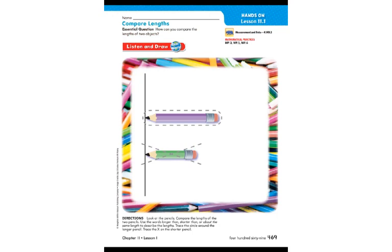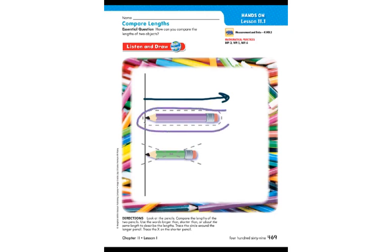In the beginning of this GoMath lesson, we are comparing the lengths of two pencils — a purple pencil and a green pencil. We line them up to see which one is longer or shorter, or about the same length. Compare the lengths of the two pencils. Use the words longer than, shorter than, or about the same length to describe the lengths. We can see this purple pencil comes out farther than the green one, so the purple pencil is longer than the green pencil.